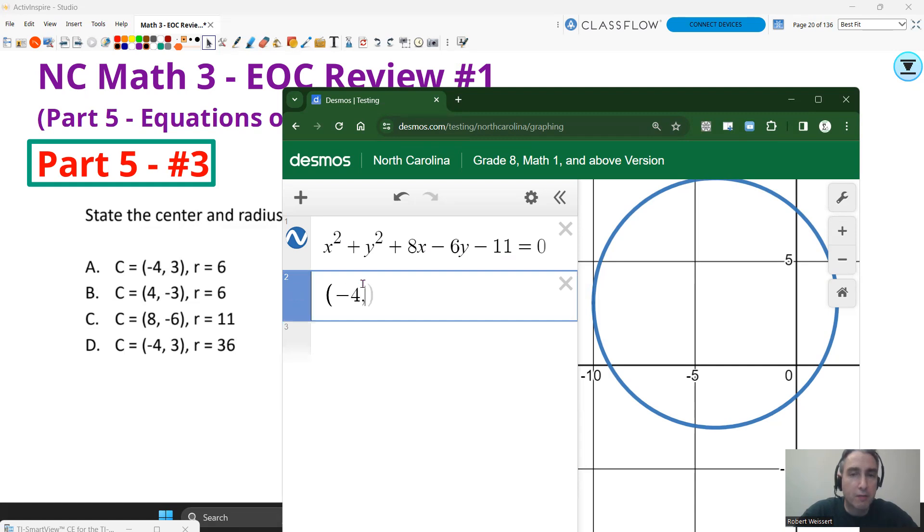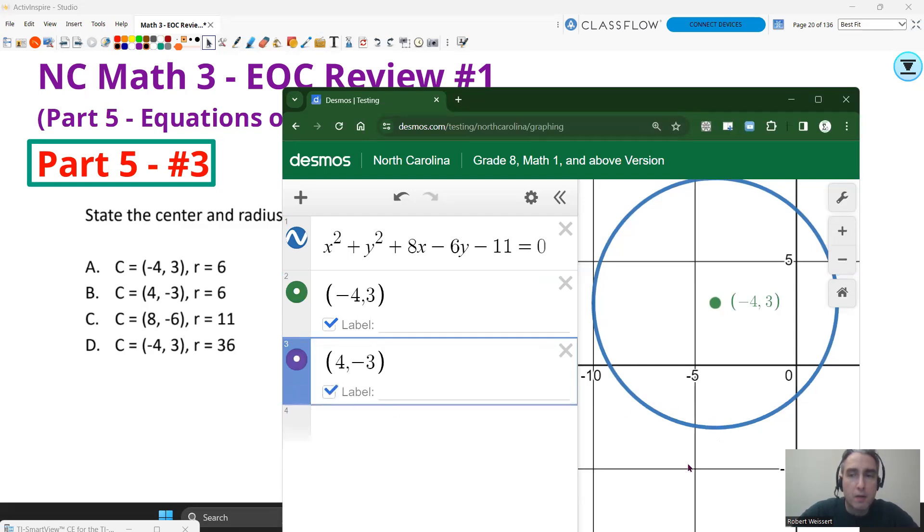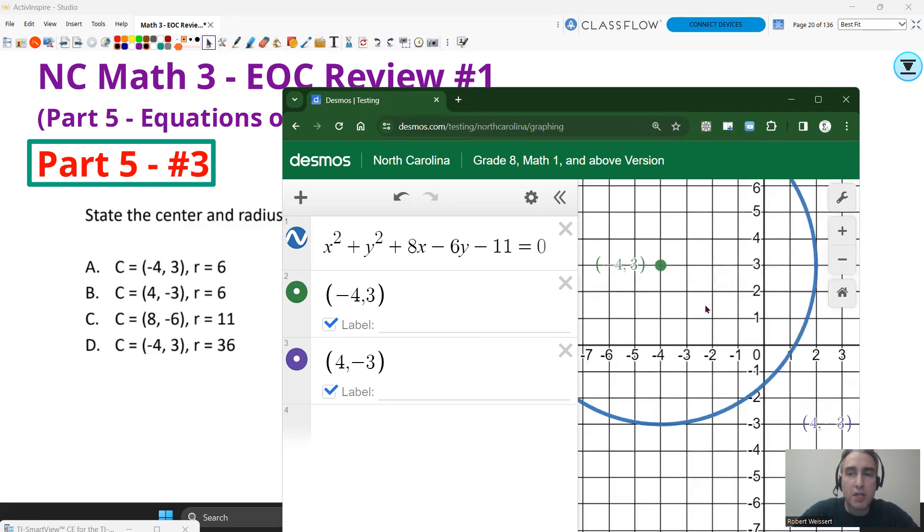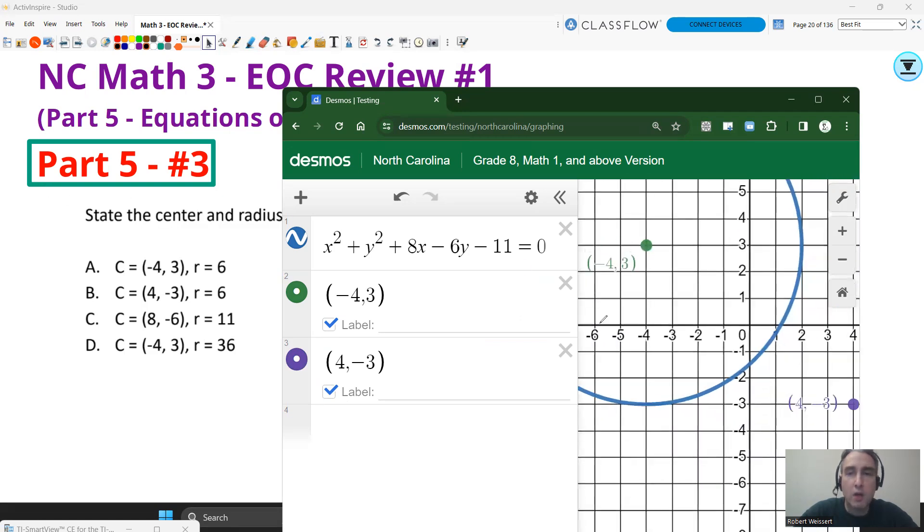But I can actually look at my answer choices to help me. So if I type in (-4, 3) versus (4, -3). You see, that's not going to be in the center. And then definitely (8, -6) is not going to be in the center. So I know it's going to be A or D. Now, as far as getting the radius go, you can just count. So how far out is it going to be out to the edge? 1, 2, 3, 4, 5, 6 spaces from that center to the edge. So I know the radius is going to be 6. And I know my answer is going to be A without lifting a pencil if I wanted to do it that way.